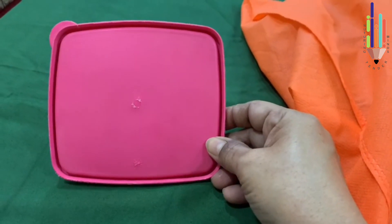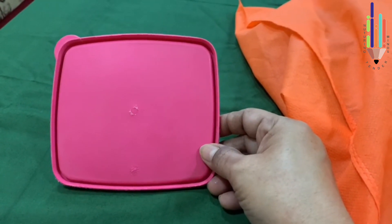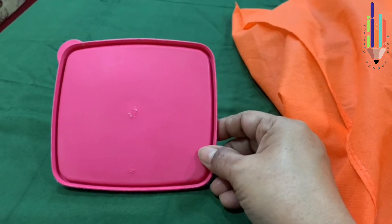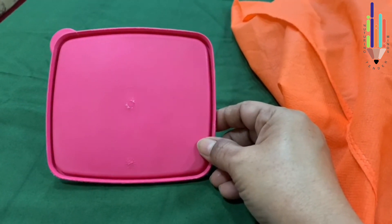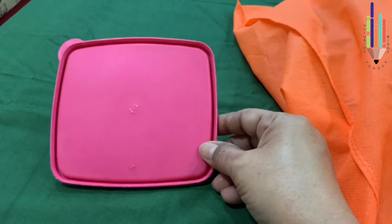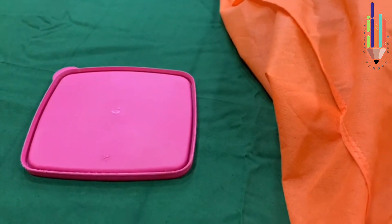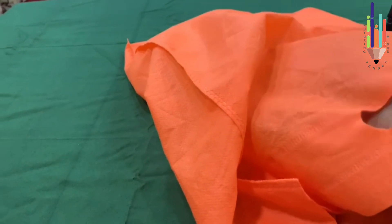Now this is a square shape, a lid of a box which is square in shape and pink in color. It has got all four sides equal. And I put my hand into the bag again.